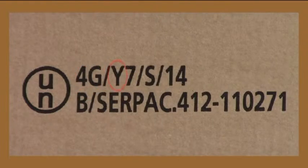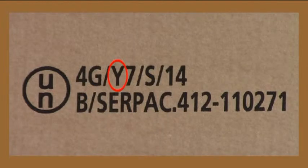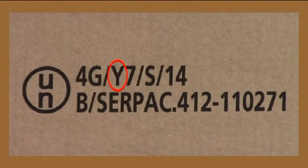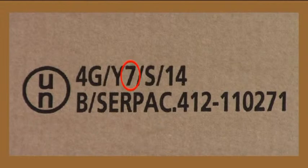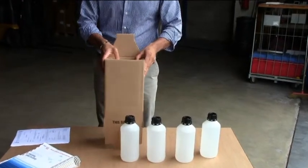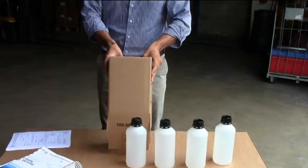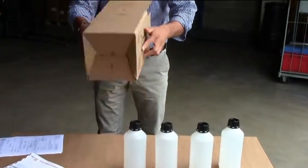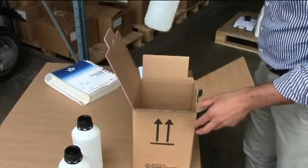The letter Y indicates that the packaging has been tested to contain products of Packing Group 2 or 3, so it can be used to contain acetone with Packing Group 2. In addition, the final gross weight of the package must not exceed 7 kg. Our plastic cans are equipped with secondary means of closure, so we can avoid intermediate liners.